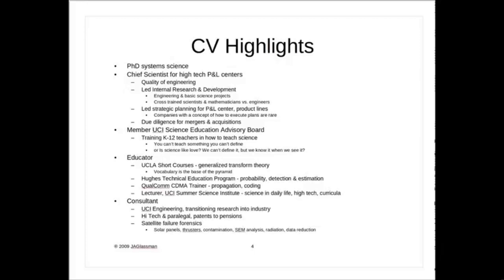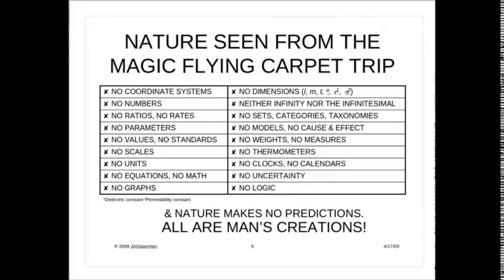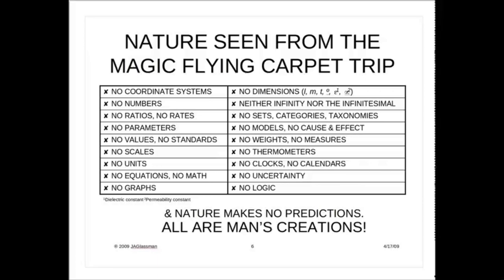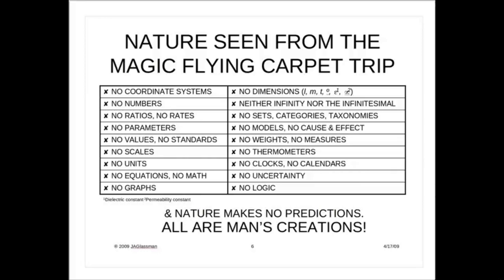I take student teachers on an imaginary trip on a magic flying carpet where we go around the universe and visit Earth before man was there at all. I made a list of all the things you don't see when flying around looking at Earth without man's presence. There's no such thing as a coordinate system, no parameters of mass, length, and time — these are all man's constructs. I derive from this that there are no models in nature for science to discover. A lot of writings say science is about discovering the laws of nature, but I contend that's not so. Science is about detecting patterns in nature and then creating models that describe what we have seen.